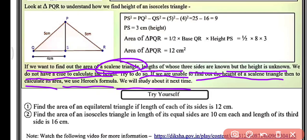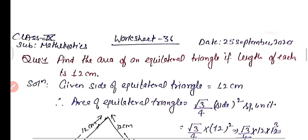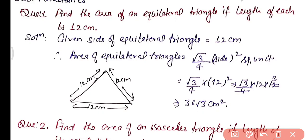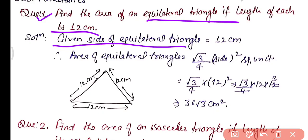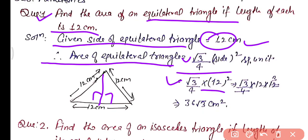Now we have two questions for practice. Question 1: Find the area of an equilateral triangle if the length of its side is 12 cm. Given: side of equilateral triangle = 12 cm. We directly use the formula: area of equilateral triangle = √3/4 into side². So √3/4 into 12 into 12 = √3/4 into 144 = 36√3 cm². This is the area of the equilateral triangle.